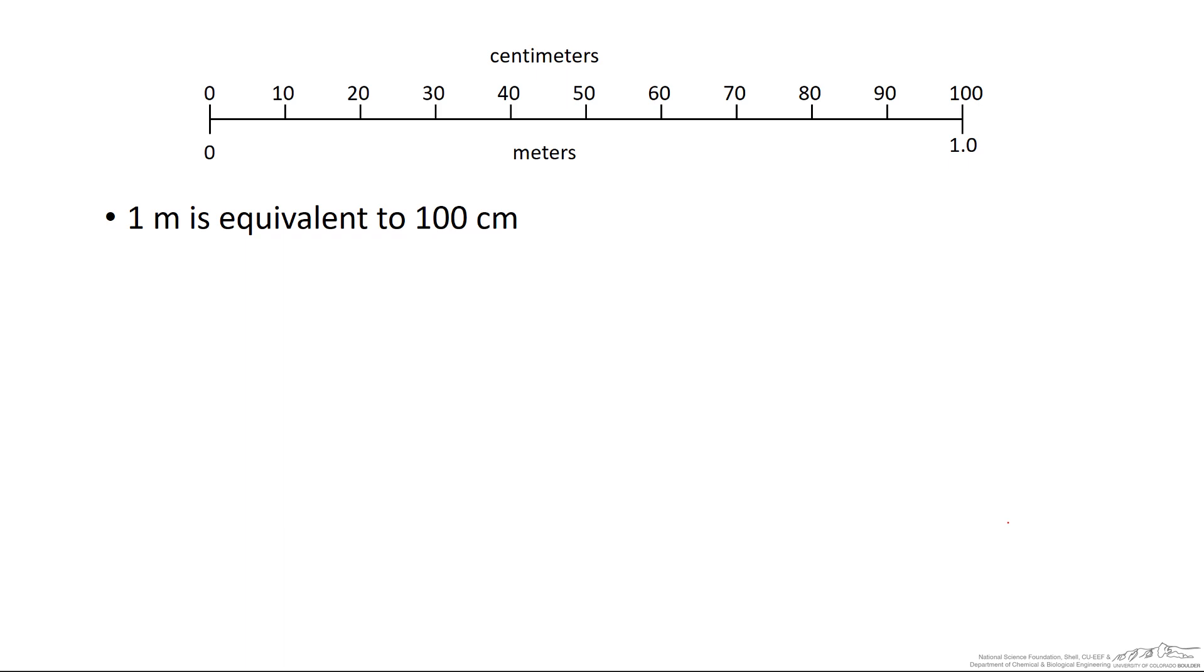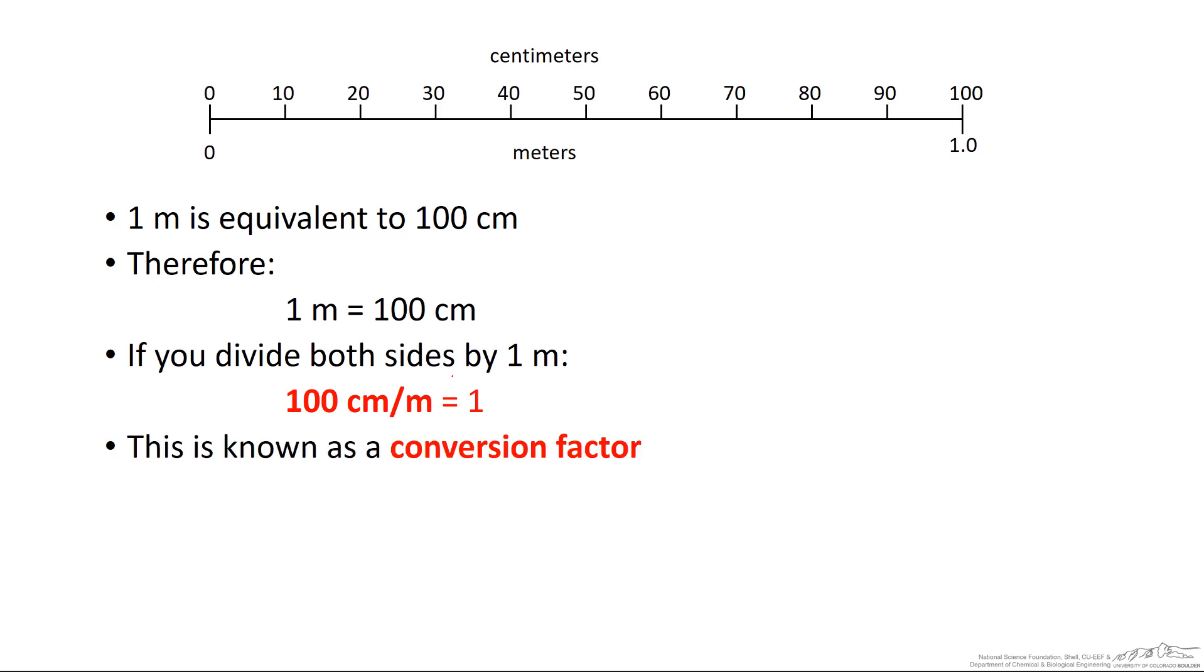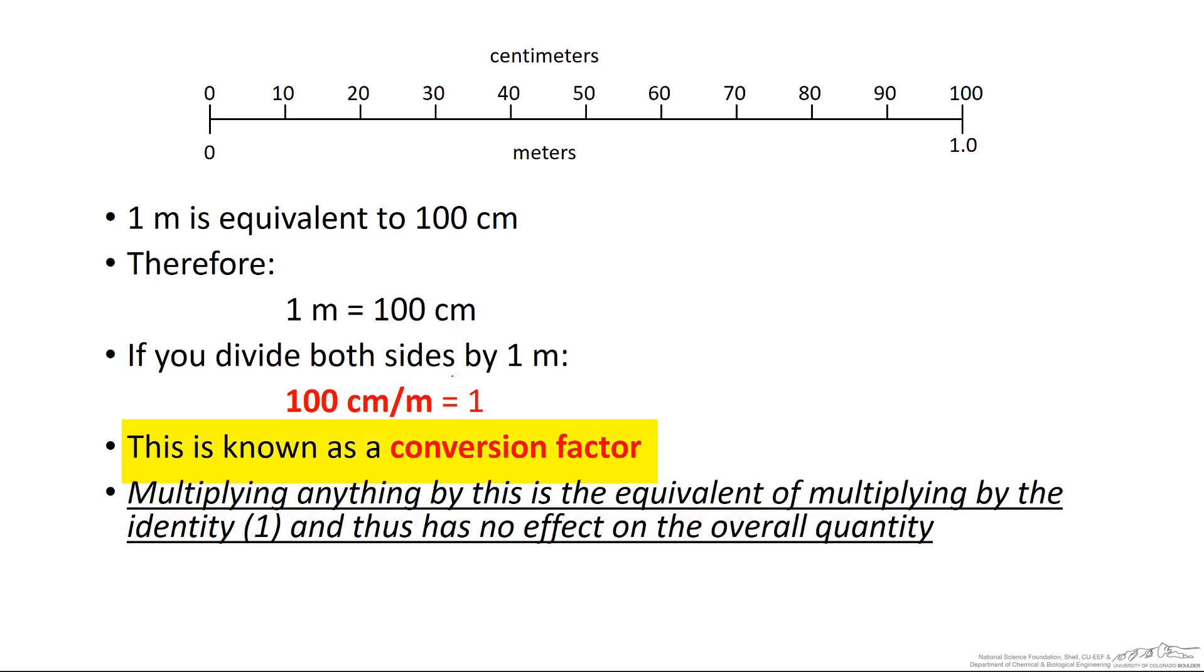So one meter is equivalent to 100 centimeters. To do this conversion, I can simply use this conversion factor. One meter equals 100 centimeters. And you have probably done this before, but you really didn't know why you were doing this. But if you divide both sides by one meter, since they're equivalent, I could write 100 centimeters per meter is equal to one. Now if you multiply anything by one, you just get the same thing as what you started with.